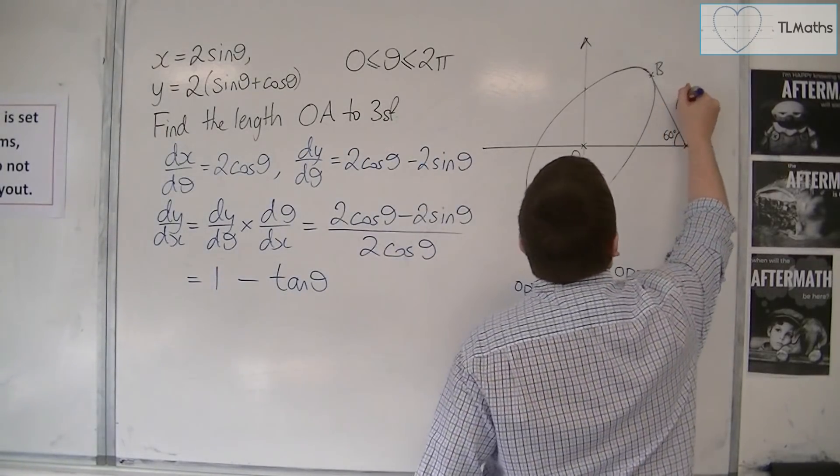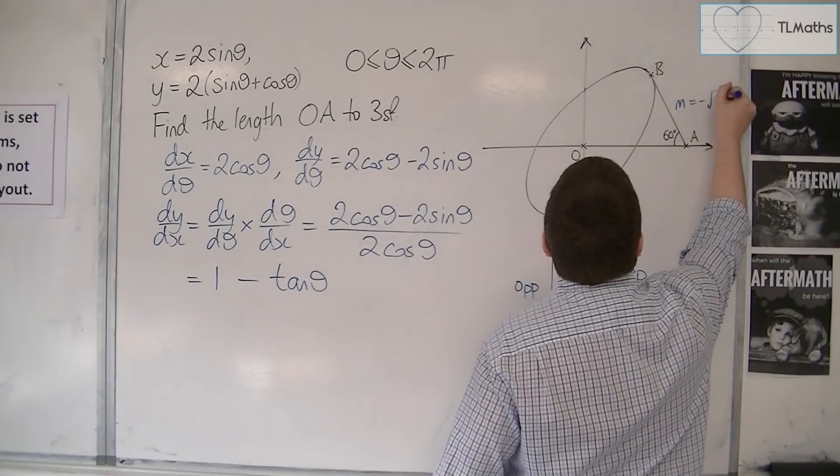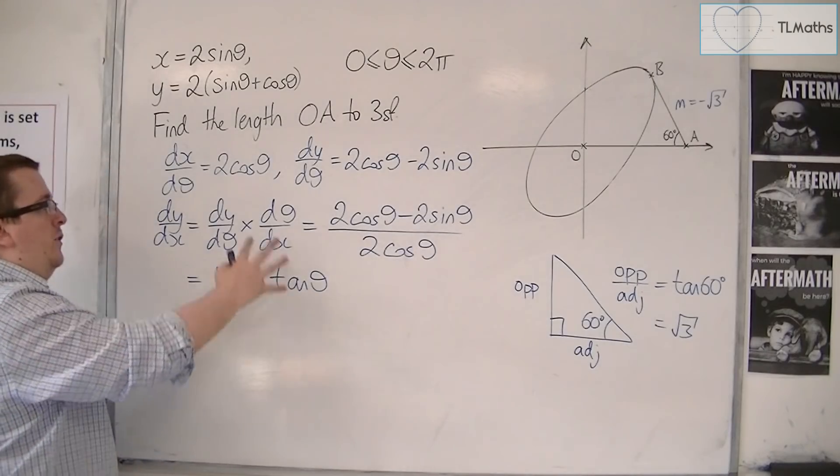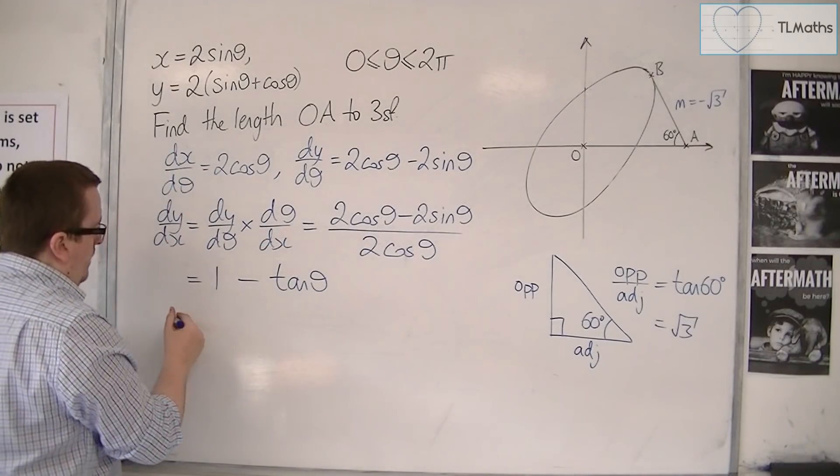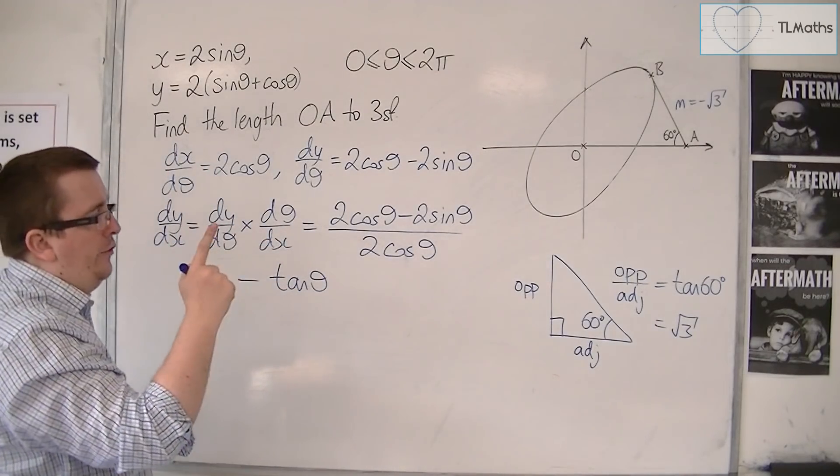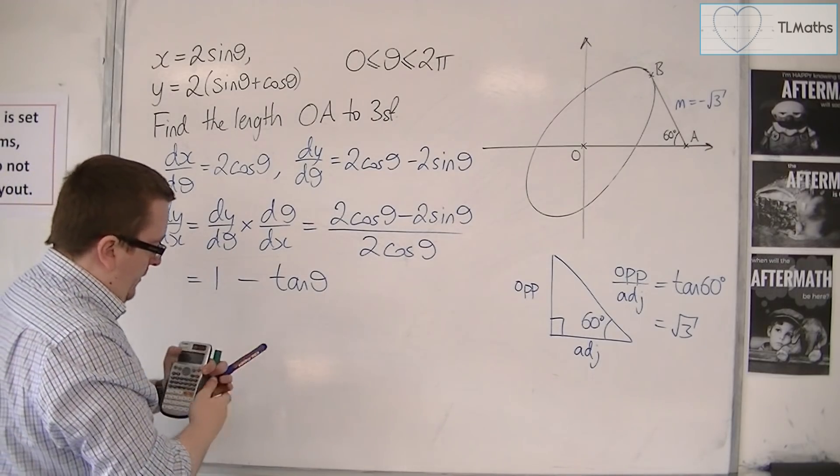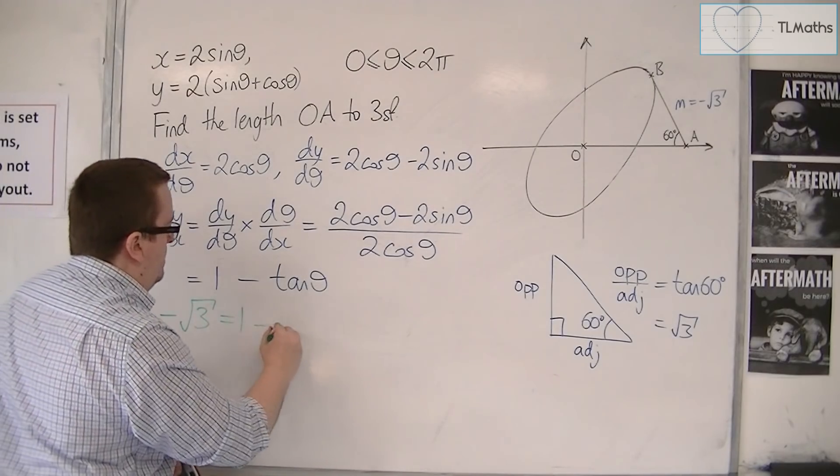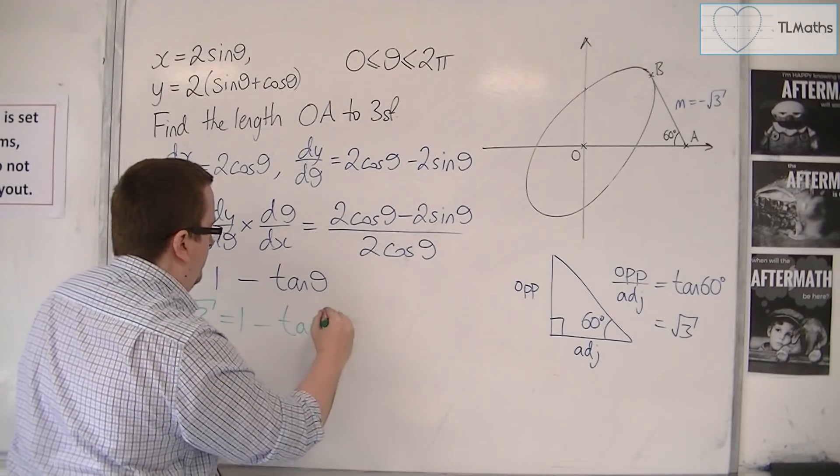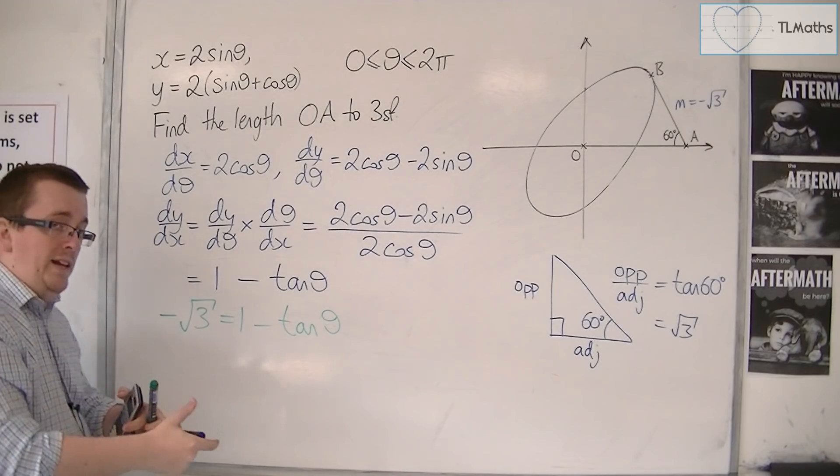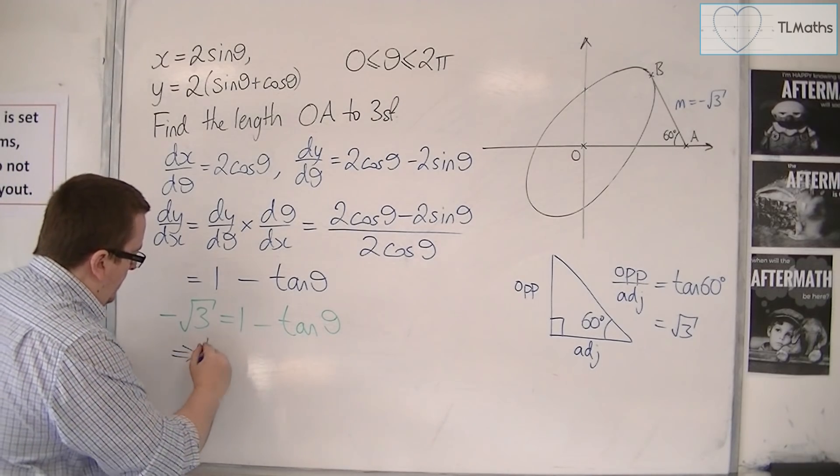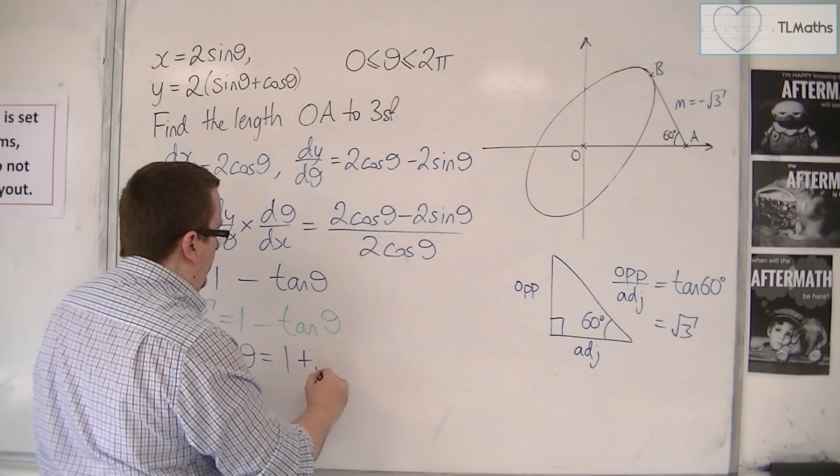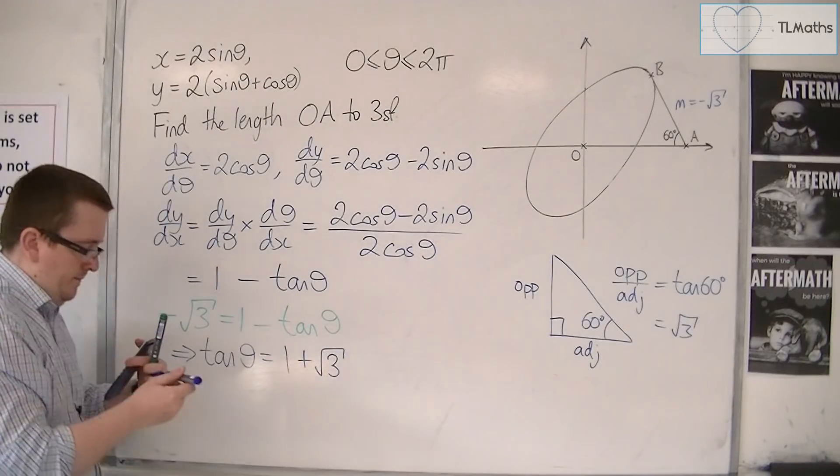So the gradient of this line is minus root 3. I can put dy by dx, the gradient function, equal to minus root 3. We've got minus root 3 equals 1 minus tan theta, and rearranging gives tan theta equals 1 plus root 3.